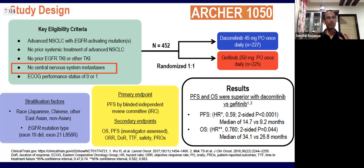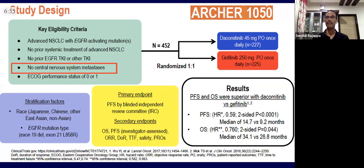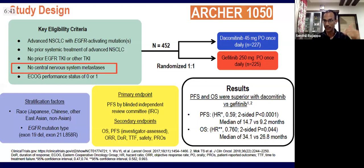This is the most recent data updated at ESMO Asia last year — the ARCHER 1050 study. This is a second-generation TKI, dacomitinib. Importantly, no patients with central nervous system metastasis went into this trial. The randomization was dacomitinib versus gefitinib, with progression-free survival as the primary endpoint, and a hierarchical analysis was performed.